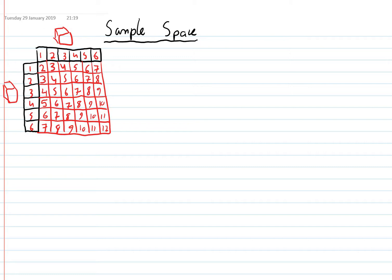By drawing that sample space diagram, I can now easily answer questions. There are 36 boxes, so the total number of outcomes is 36. If I was asked what's the chances of rolling an even number, I just count up the even numbers: 1, 2, 3, 4, 5, 6, 7, 8, 9, 10, 11, 12, 13, 14, 15, 16, 17, 18. So 18 out of 36, which is a half.